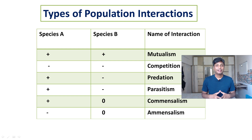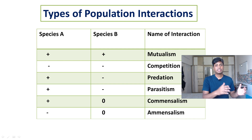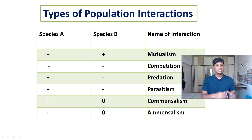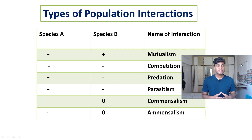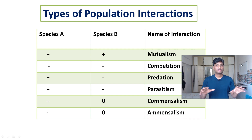In this particular table you can see some signs mentioned. In case of mutualism, species A and species B both have plus signs, whereas in competition both have negative signs. A plus sign means the species is benefited from the other species, so in mutualism both species benefit each other, while in competition both are actually harming each other.